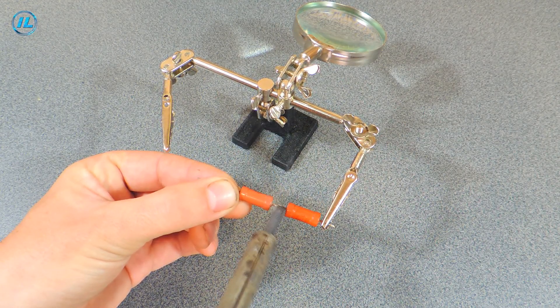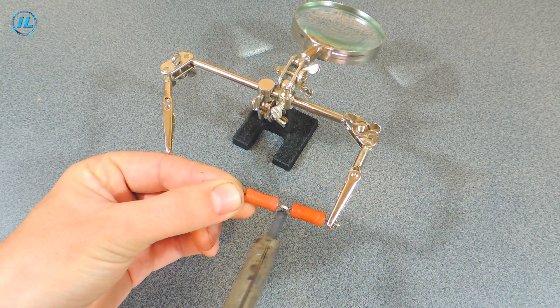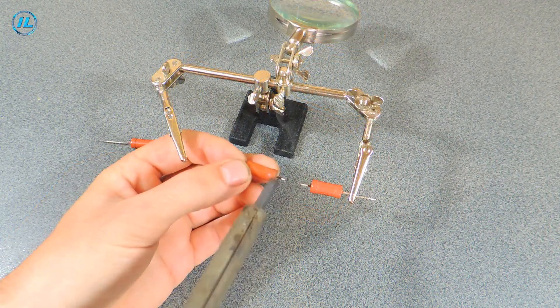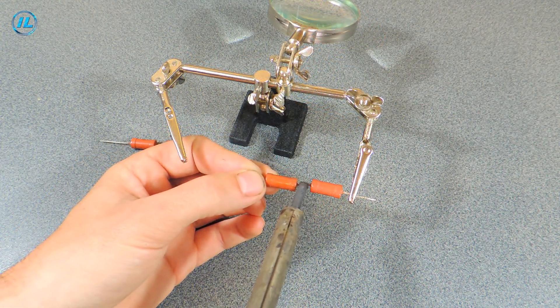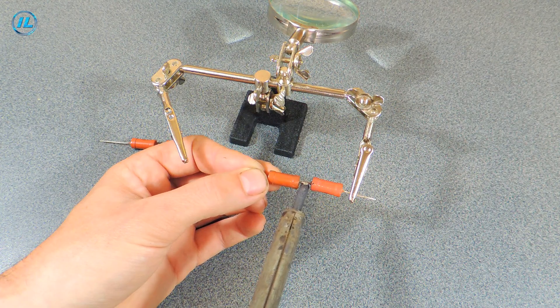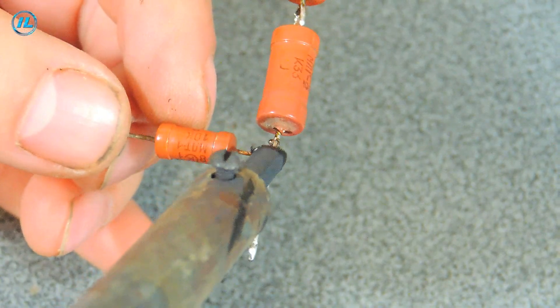First of all, you will need two resistors at 470 ohms each. I didn't have any of these available, so I'll connect two resistors at 330 and 150 ohms connected in series.